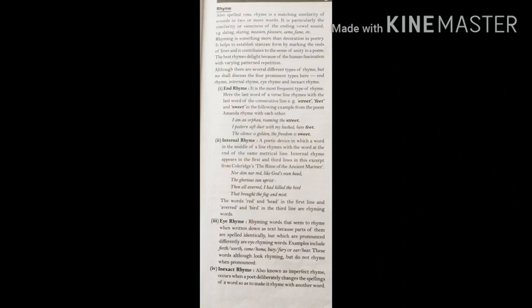The four types are: end rhyme, internal rhyme, eye rhyme, and inexact rhyme. First is end rhyme — the most frequent type of rhyme. Here the last word of a line rhymes with the last word of a consecutive line. For example, from the poem: 'I am an orphan roaming in the street. / The patterns of dust with my hushed bare feet. / The silence is golden. / The freedom is sweet.' — street, feet, and sweet are rhyming end words.